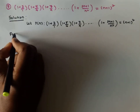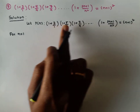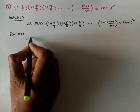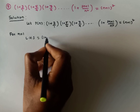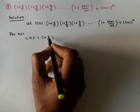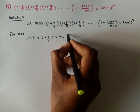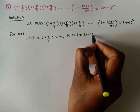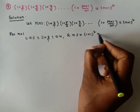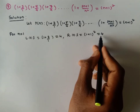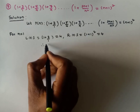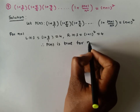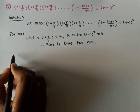For n=1, the left-hand side is 1 + 3/1 = 1 + 3 = 4. The right-hand side is (1+1)² = 2² = 4. So left-hand side equals right-hand side. Therefore P(n) is true for n=1, and the first step is verified.